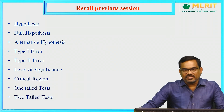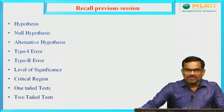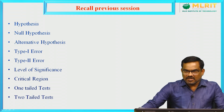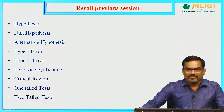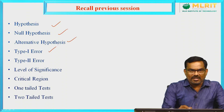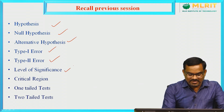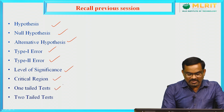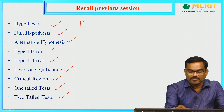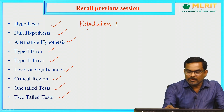Let us recall the previous session. In the last session, we discussed all the definitions required to test a particular hypothesis — such as what is exactly a statistical hypothesis, null hypothesis, alternative hypothesis, type 1 error, type 2 error, level of significance, critical region, one-tailed and two-tailed tests. Any statement about a population parameter is called a hypothesis.